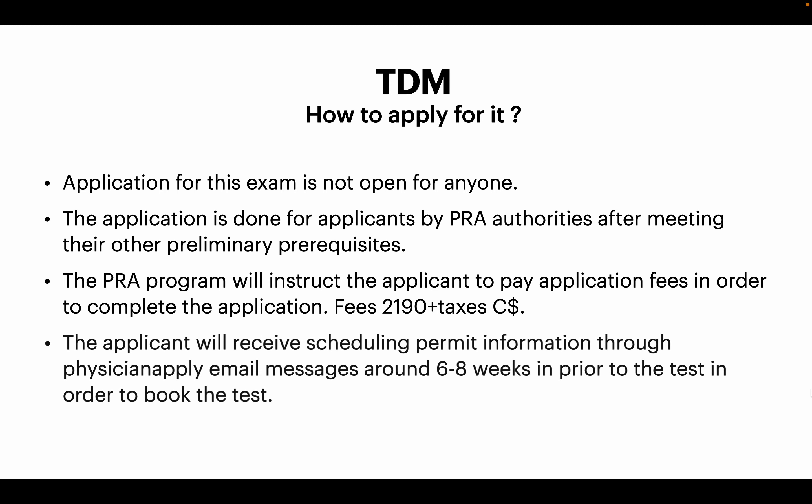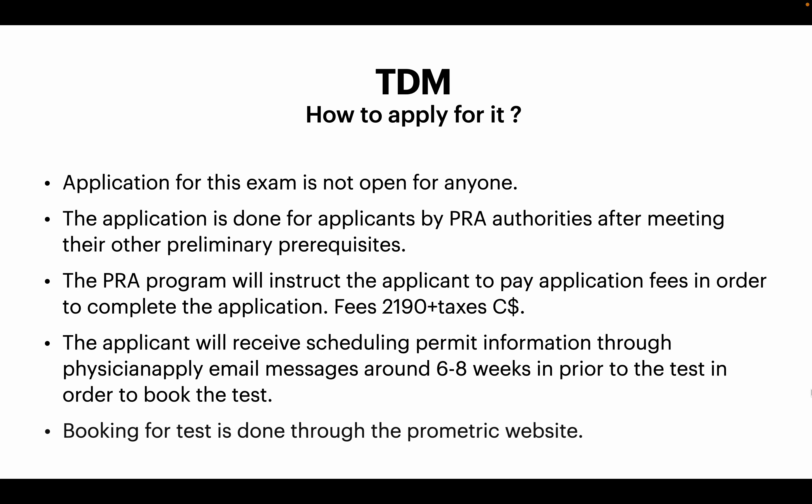The applicant will receive scheduling permit information through their PhysicianApply email, and this will happen around six to eight weeks prior to their test date or test period, in order for them to book the exam. The information for booking is provided via the PhysicianApply email, but the actual booking is done through the Prometric website.